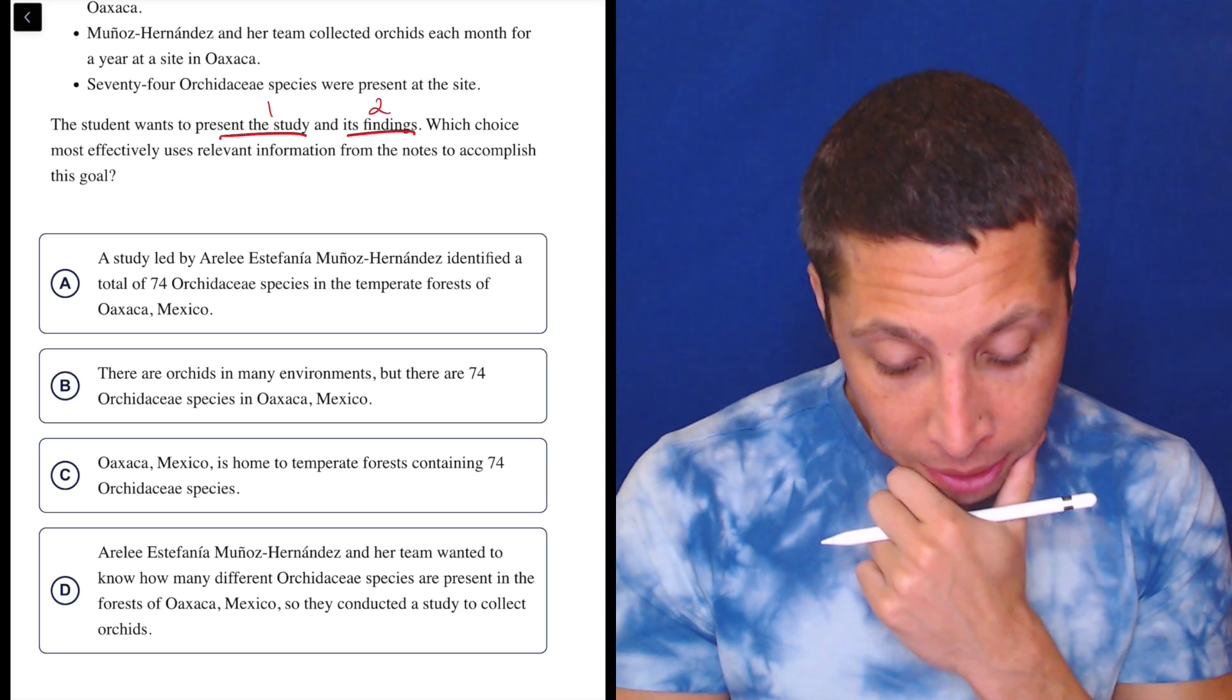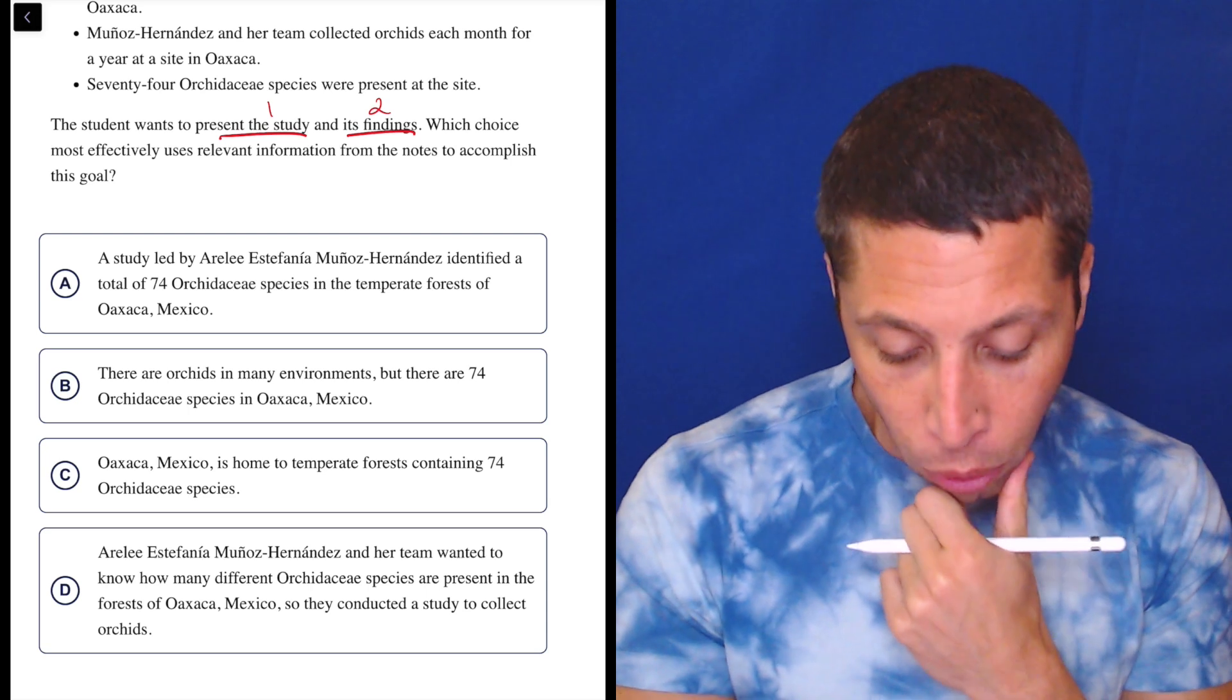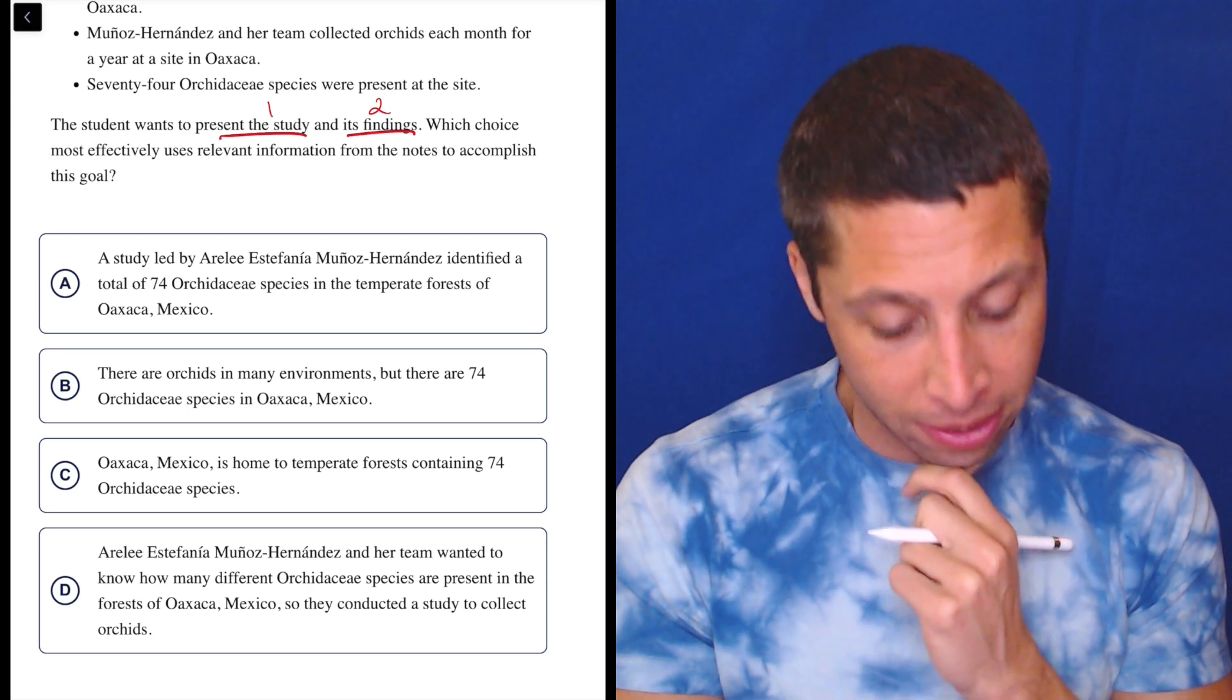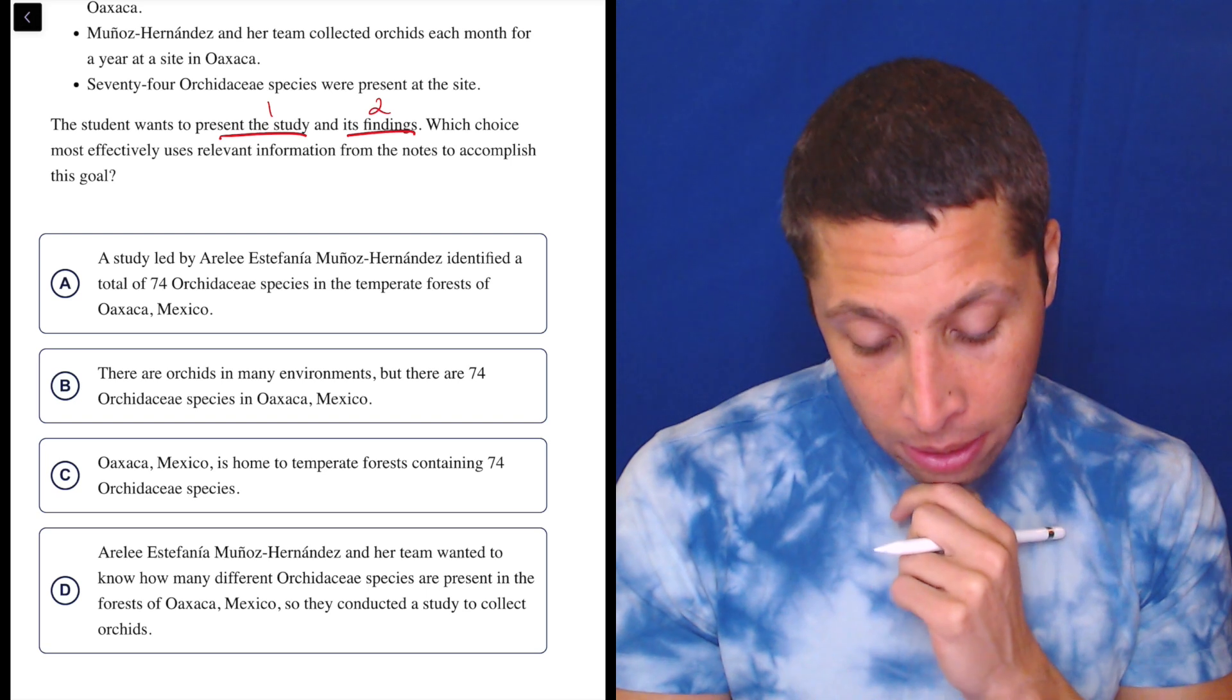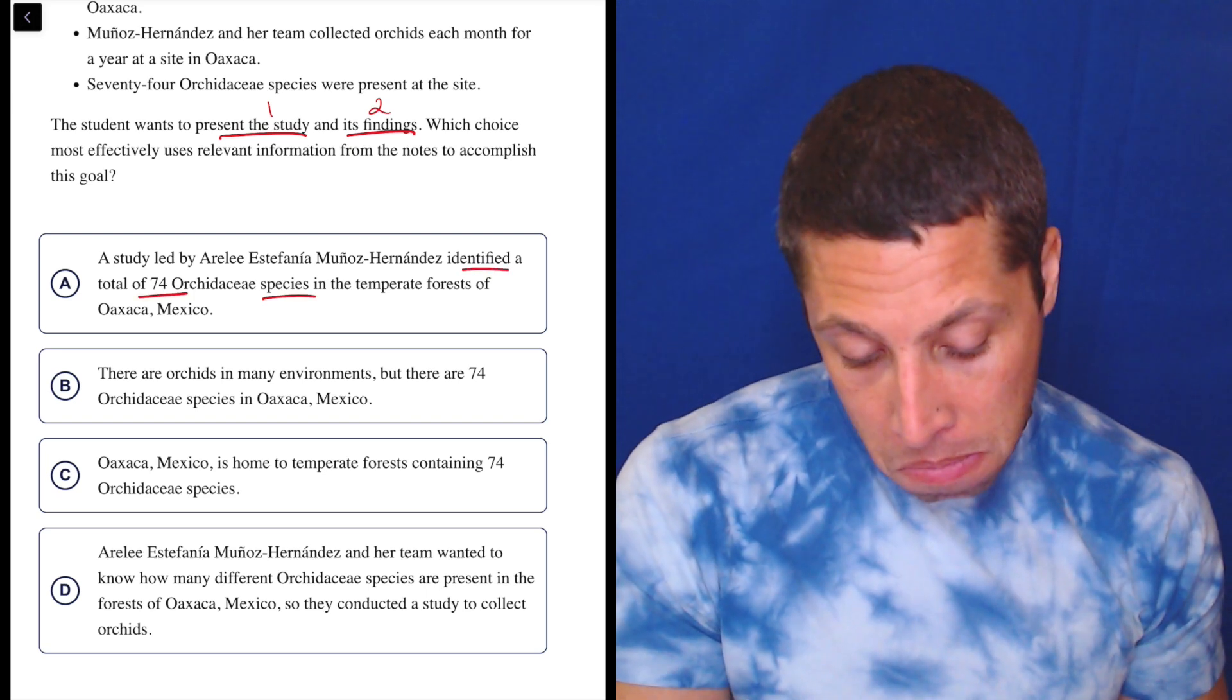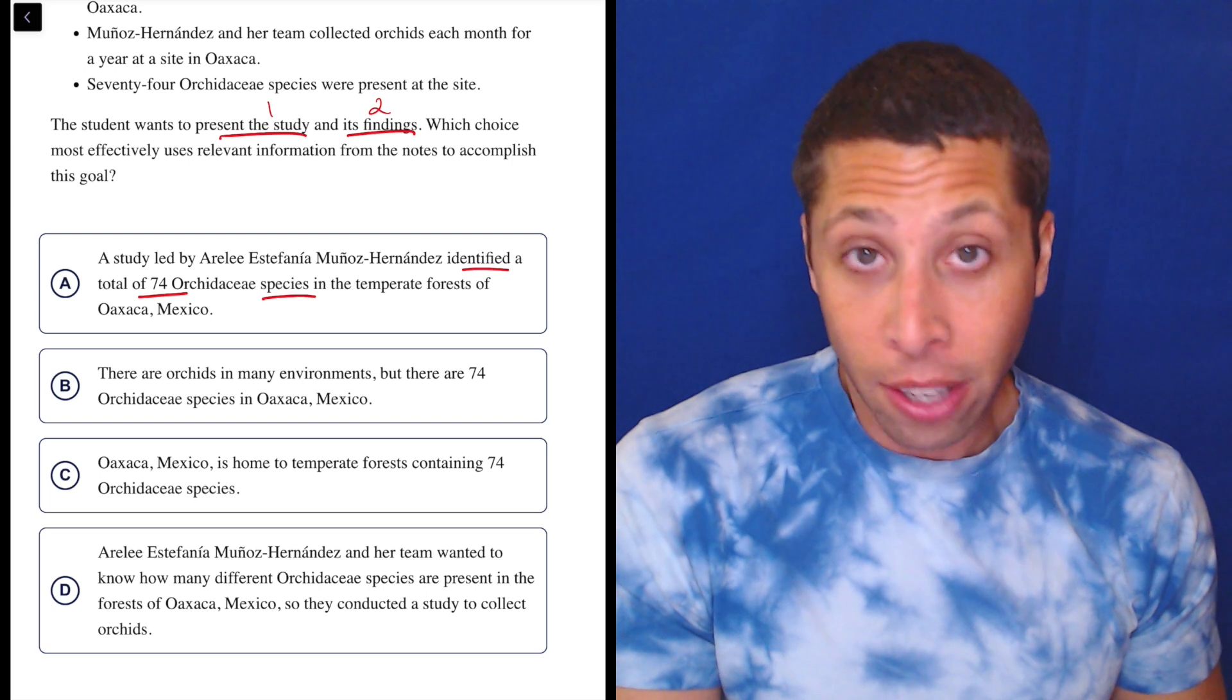So A - a study led by Aralee, whatever, identified a total of 74 Orchidaceae species in the temperate forests of Oaxaca, Mexico. Okay, well, I guess that's findings. They identified 74 species, maybe? I genuinely don't know.